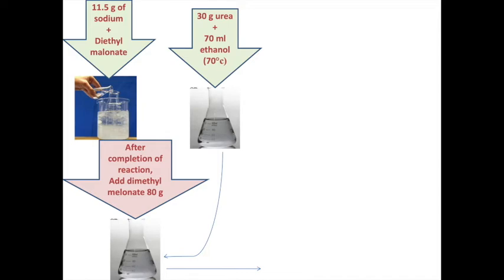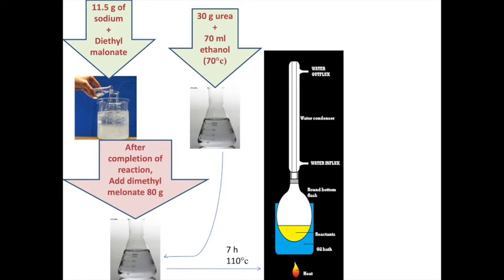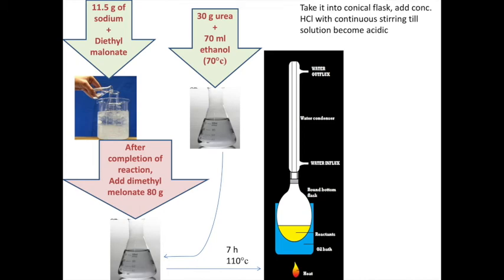Once the sodium-ethanol reaction is complete, add 80 grams of diethyl malonate to the round-bottom flask. Then add the urea-containing solution into the round-bottom flask. Set up the reflux assembly and start refluxing the mixture for seven hours in an oil bath, heating the mixture to 110 degrees Celsius.